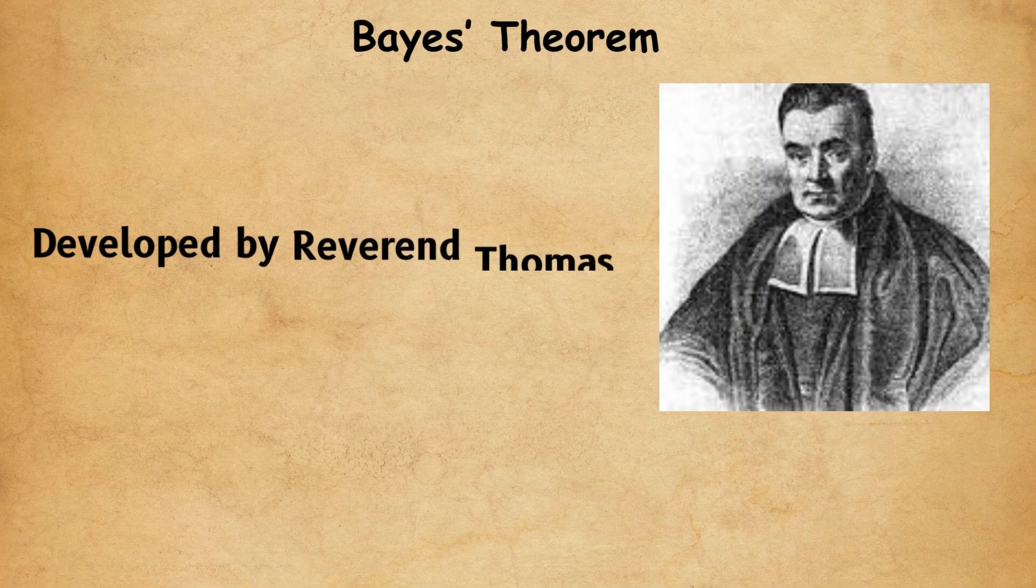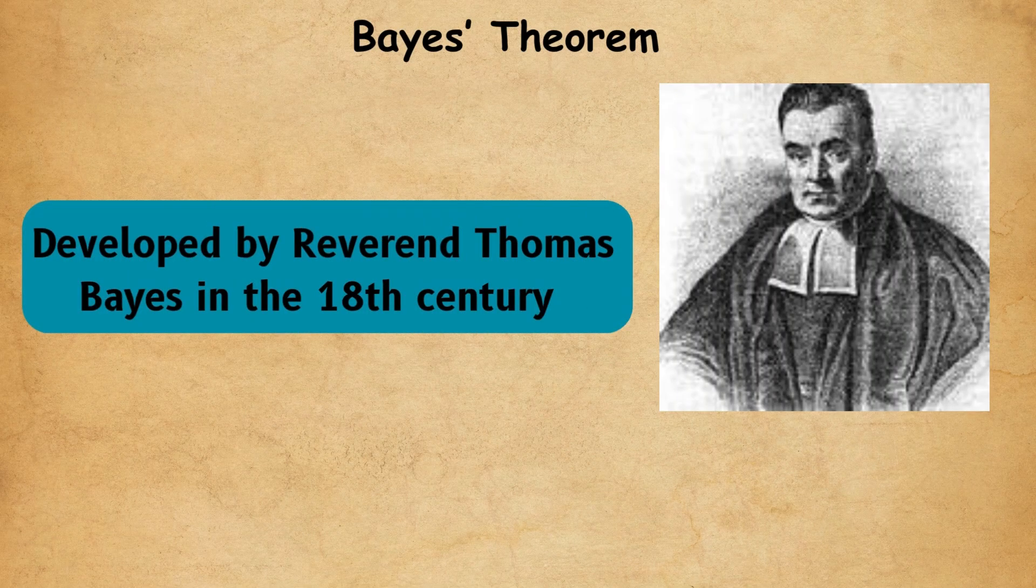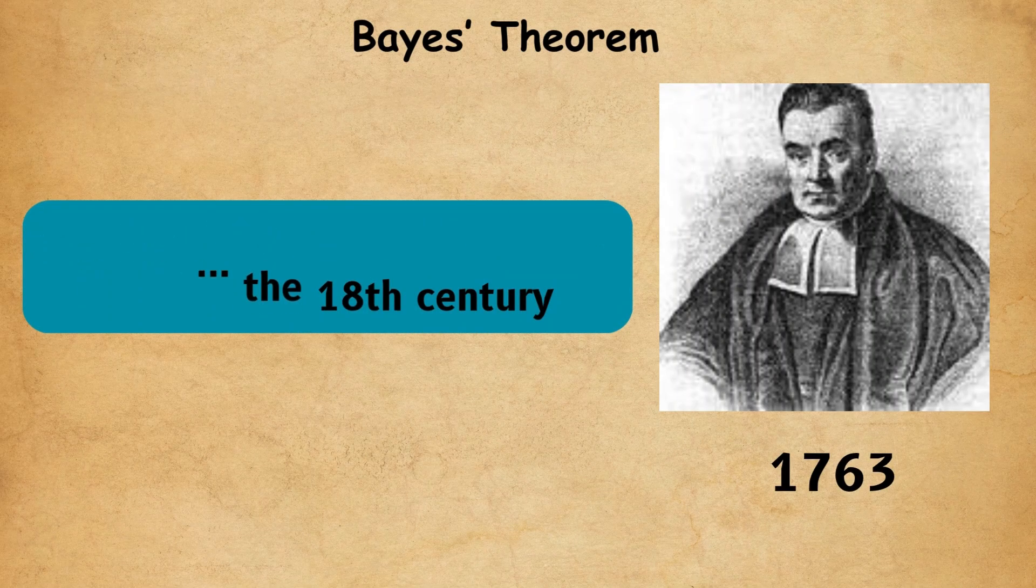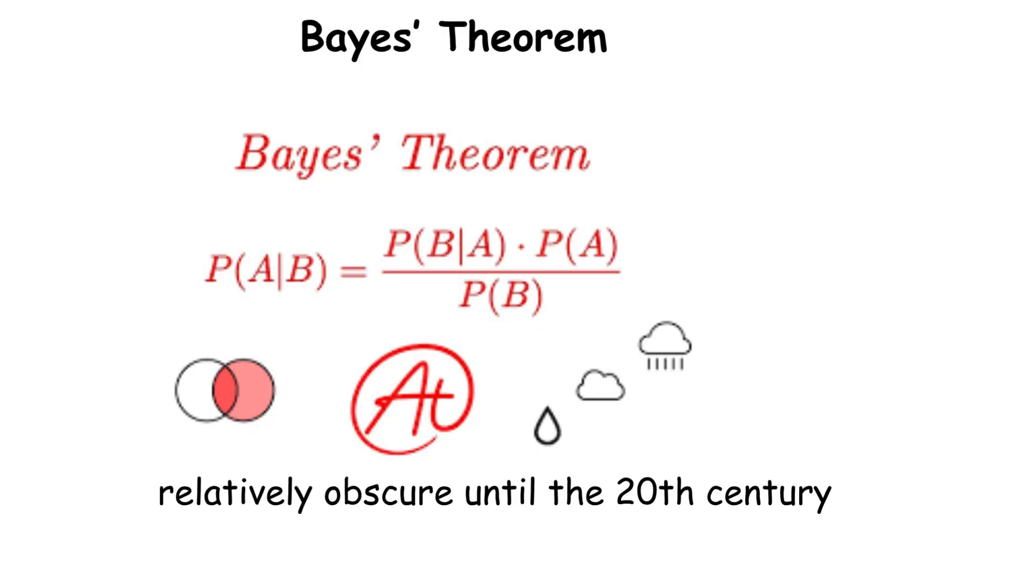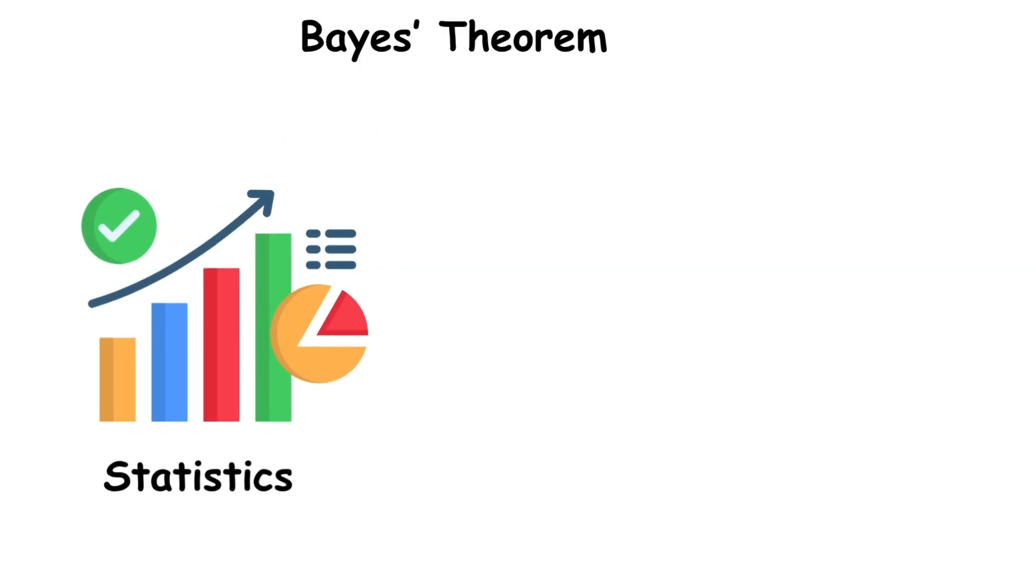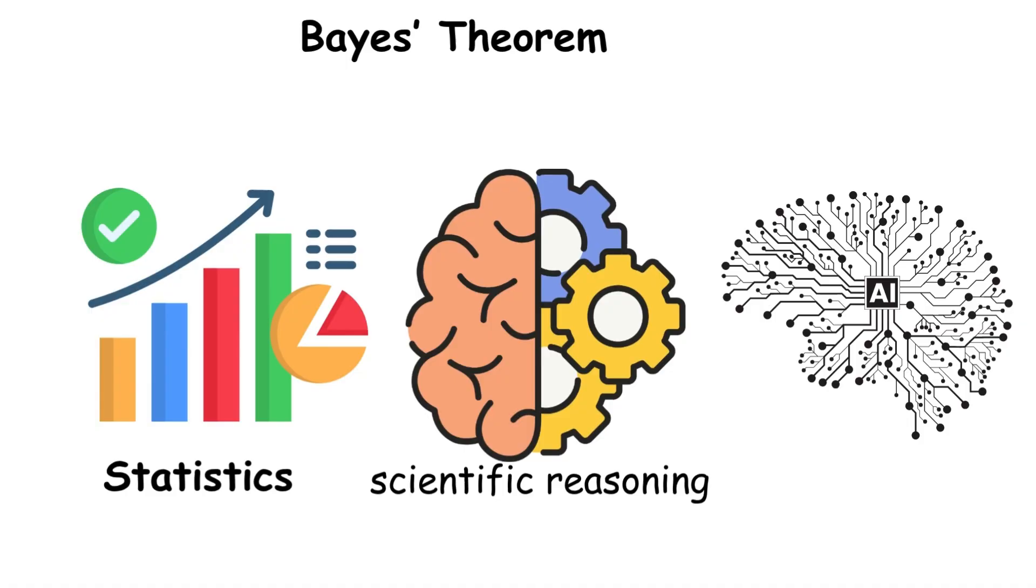Bayes' Theorem, developed by Reverend Thomas Bayes in the 18th century and published posthumously in 1763, it remained relatively obscure until the 20th century when it became fundamental to statistics, artificial intelligence, and scientific reasoning.